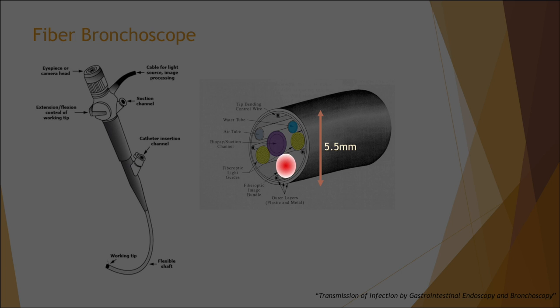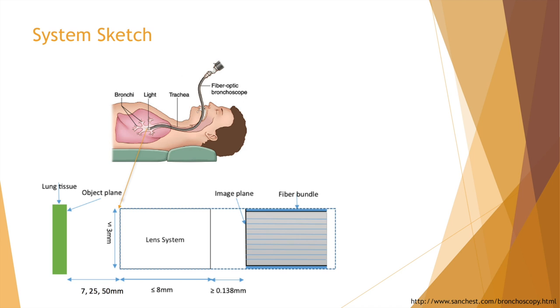Usually the diameter of the entire tube is only around 5.5 millimeters, which indicates very tight constraints on the size of the imaging channel diameter. Here is a sketch of the objective system. The object we're trying to image is the lung tissue. The length of the whole system is suggested to be shorter than 8 millimeters to keep the form factor as small as possible.